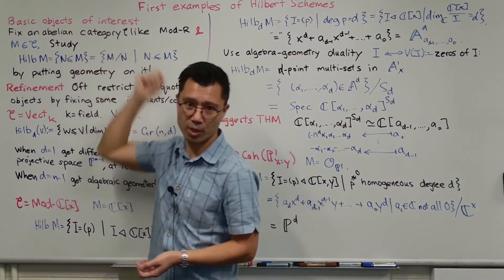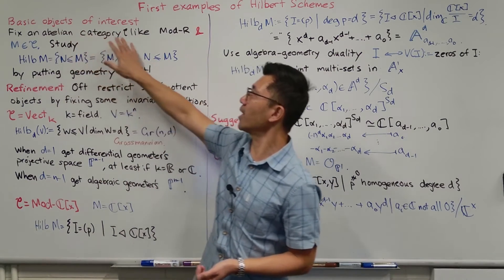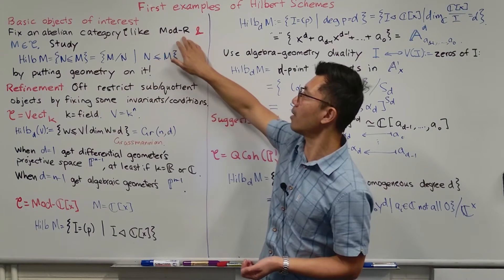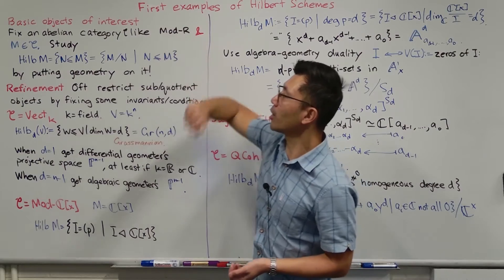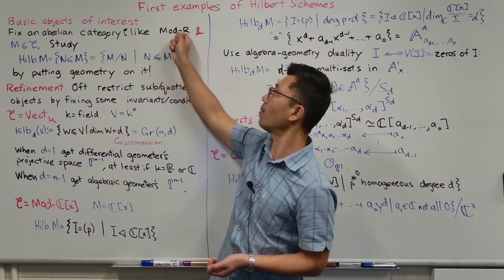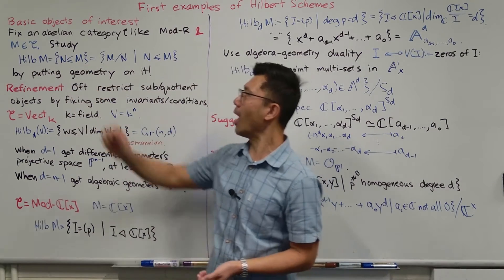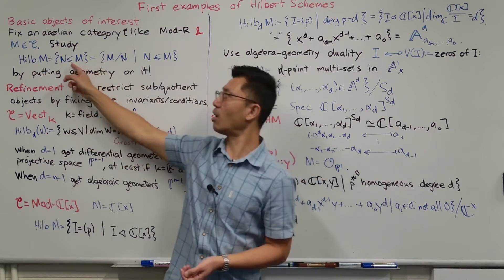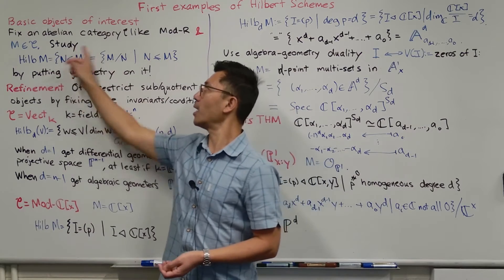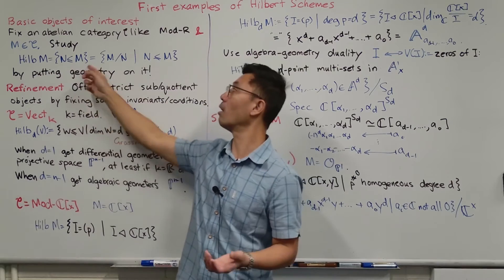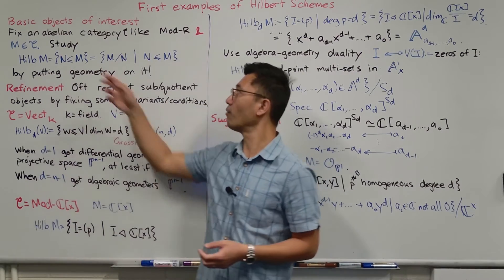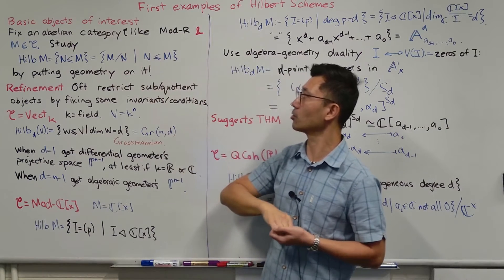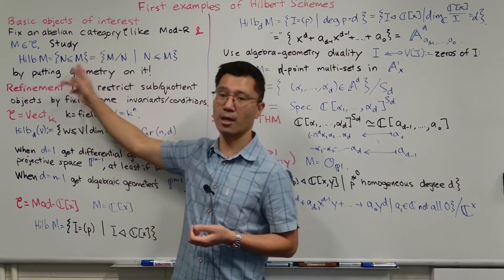So let's look at what are the basic objects of interest here. We'll start by fixing an abelian category C. If you're not so familiar with this notion of abelian categories, just think about modules over some ring R. Next, we're going to pick some object M inside C. So if you're looking at modules over R, that's just some R-module. The Hilbert scheme, Hilbert M, is just a set of sub-objects of M. In the case of the module category, that means the set of sub-modules of M. Since it's an abelian category, you have for each sub-object the corresponding quotient — M mod M' — which is the quotient module.